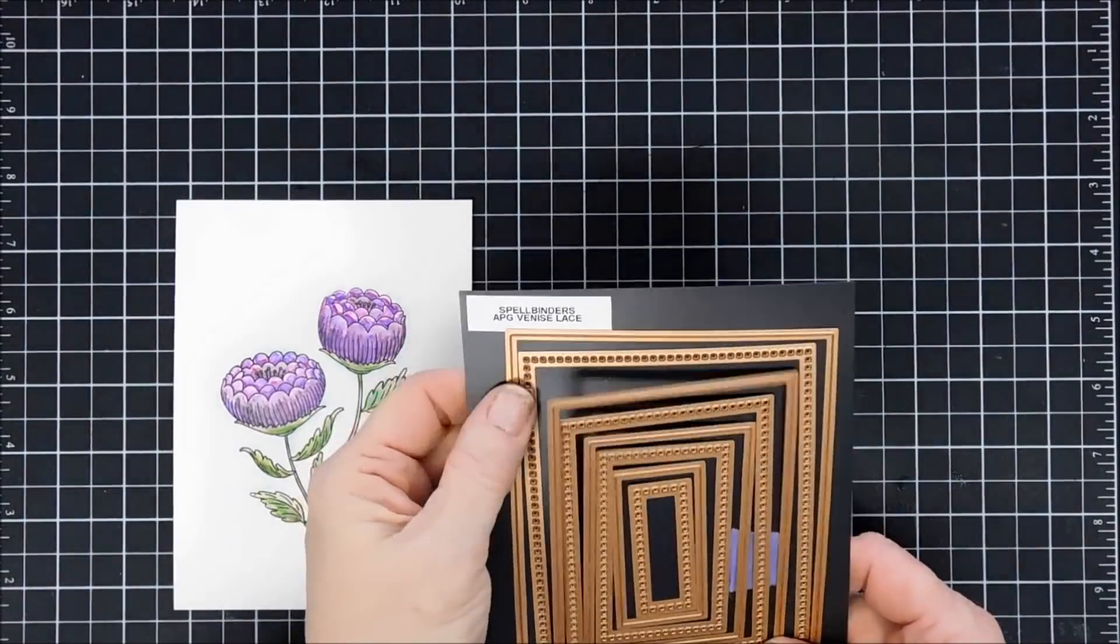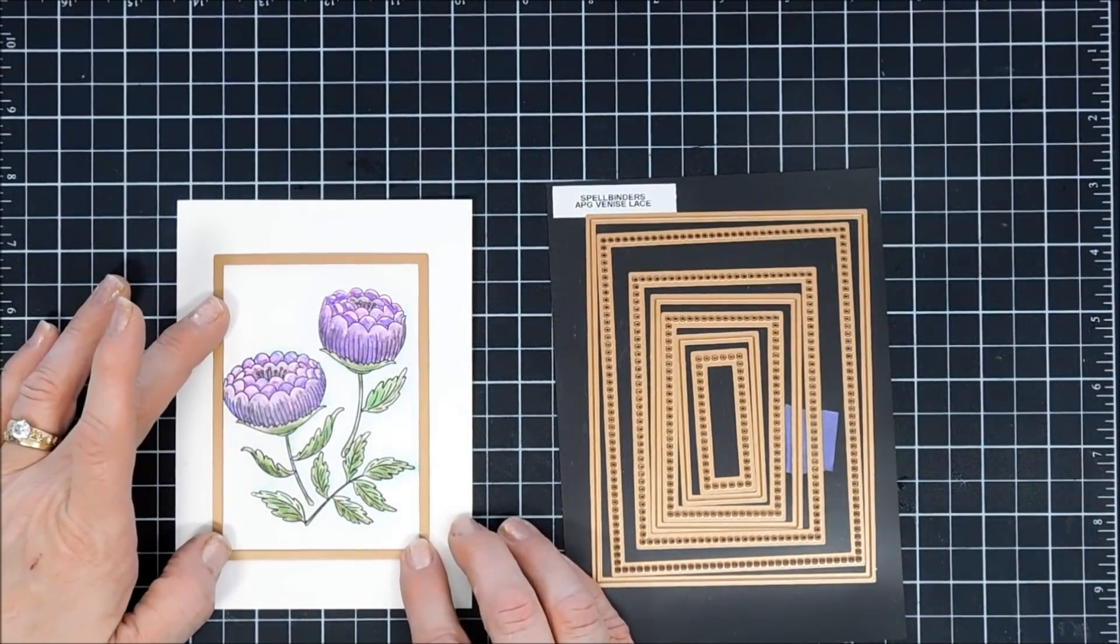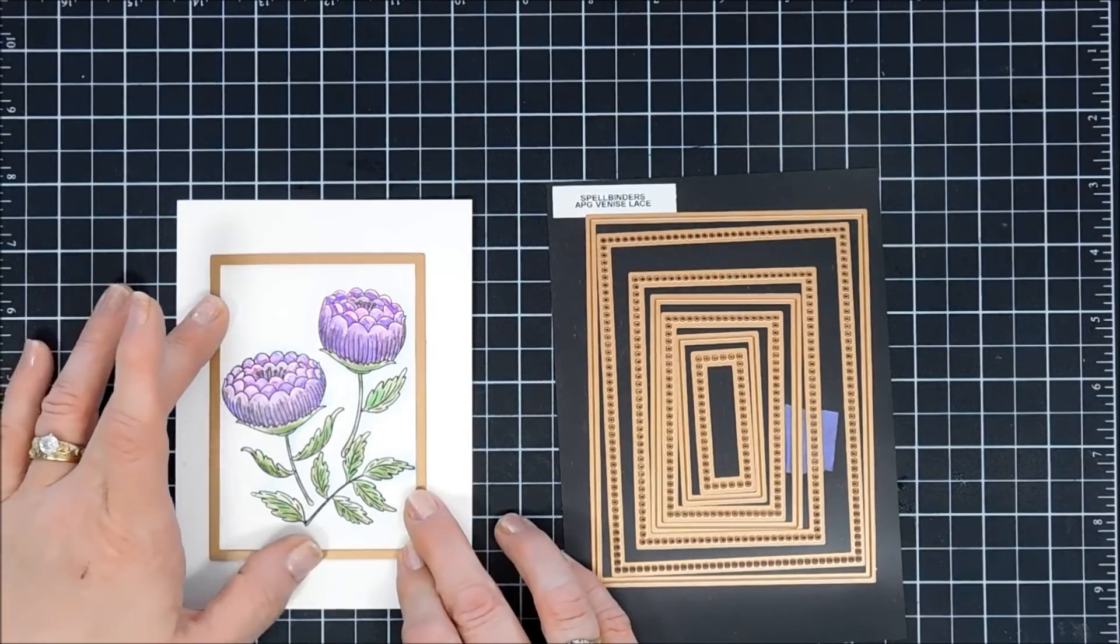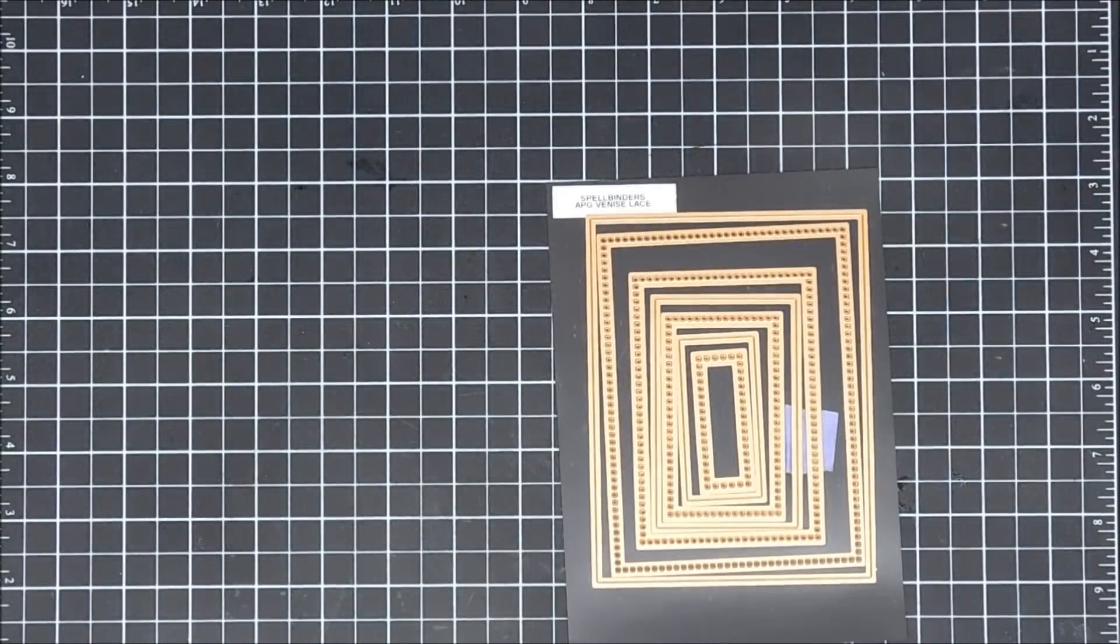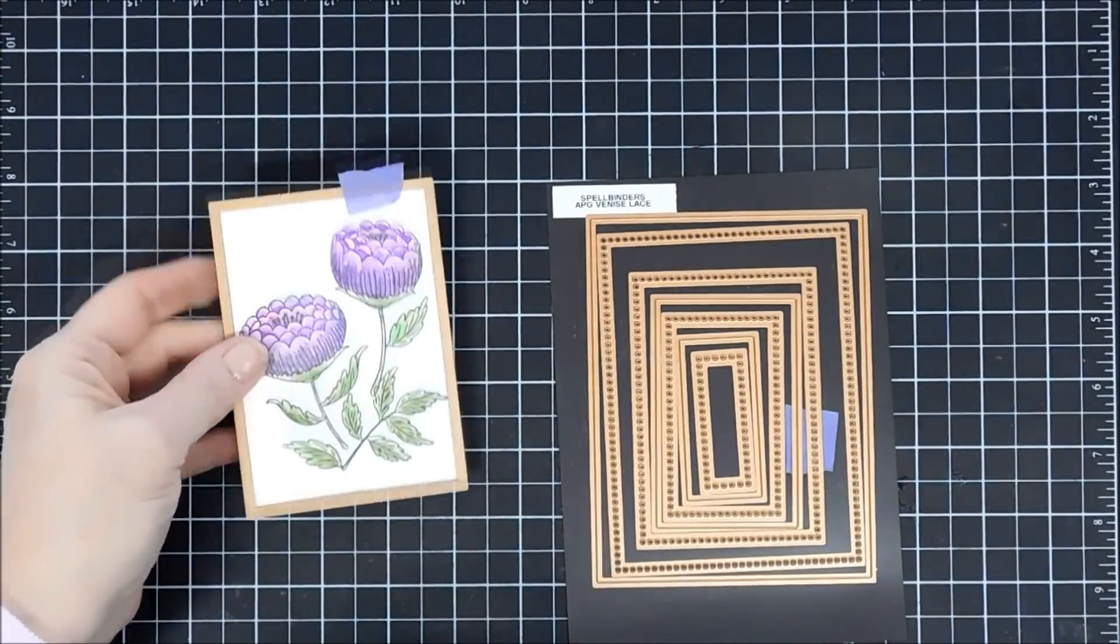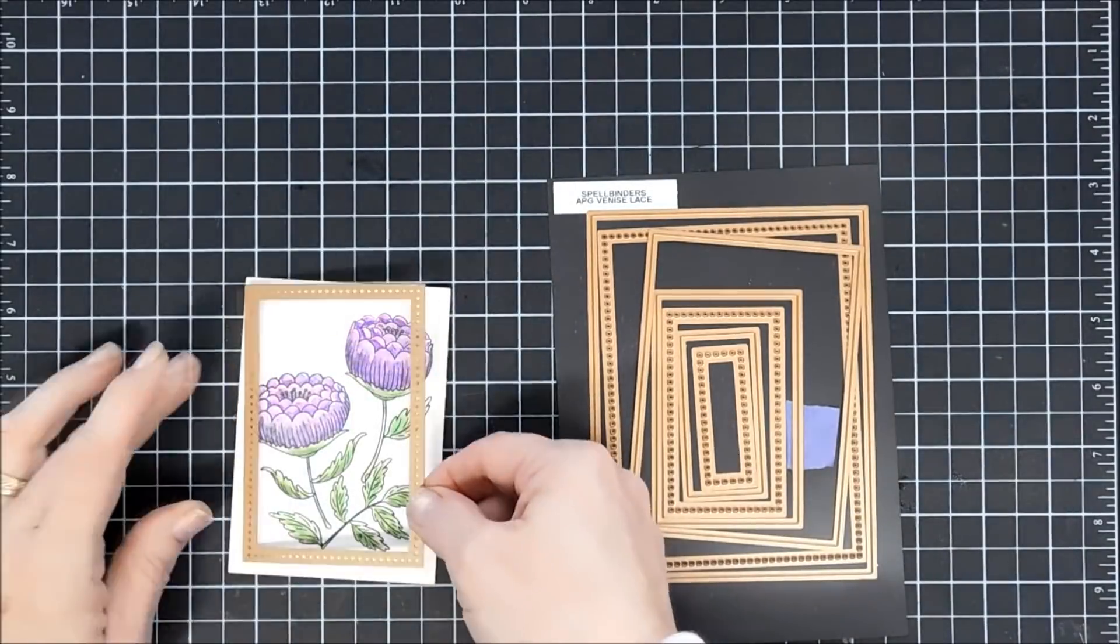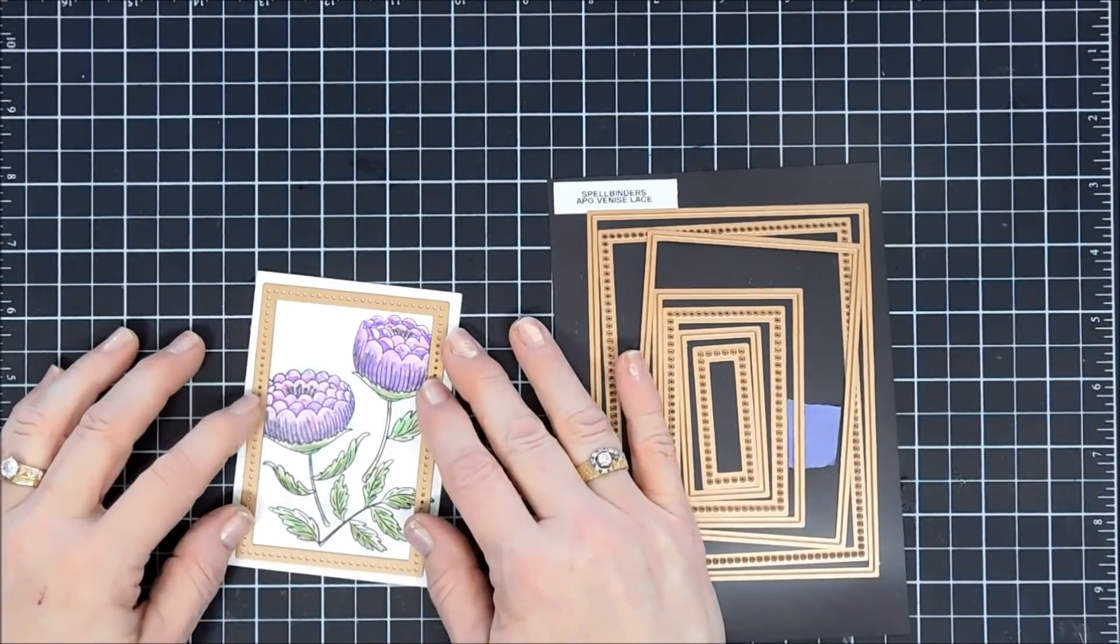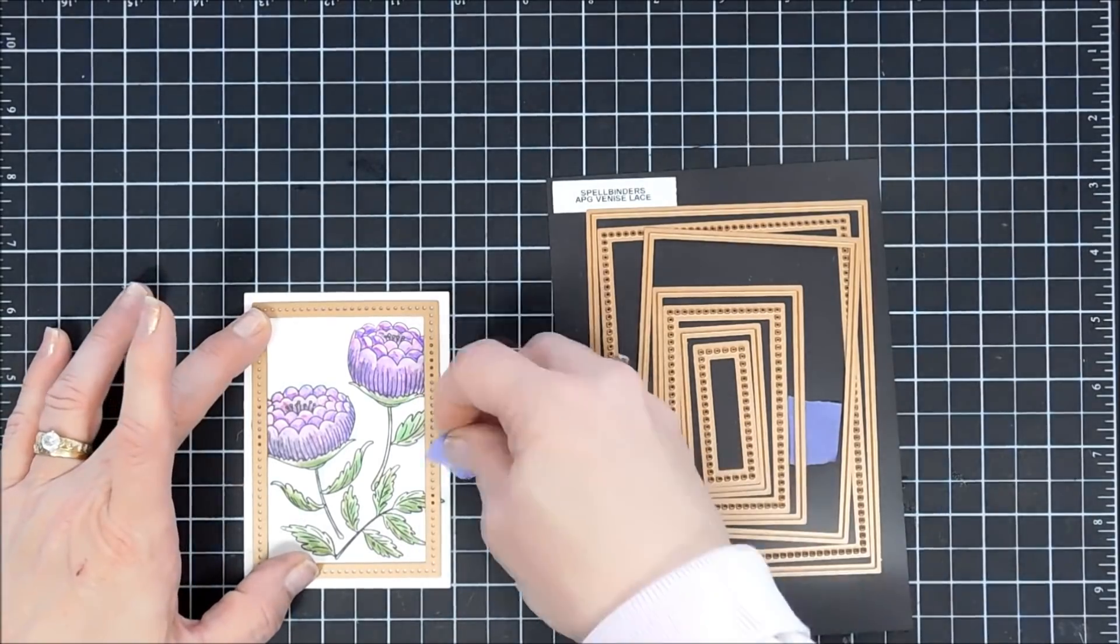Coloring is all done, and I think purples are so pretty. Next, I'm going to cut out a frame using Spellbinders APG dies from the Venice Lace Collection. It cuts out just a frame, and then this second piece will cut out a polka dot detail around your frame, which is super pretty.